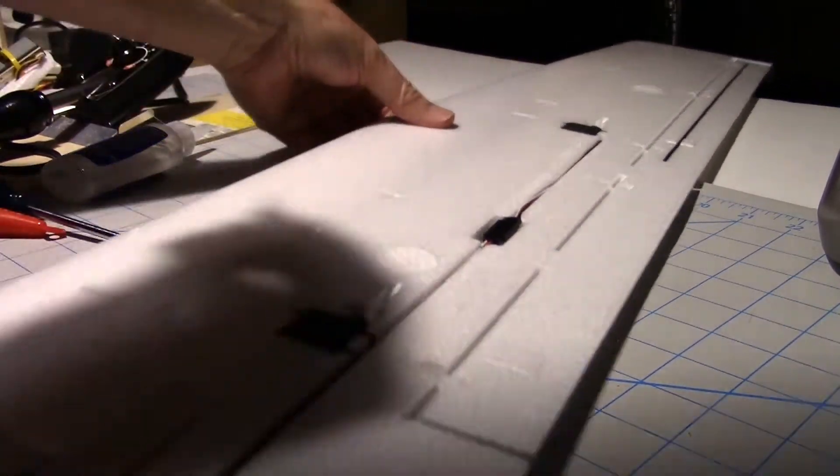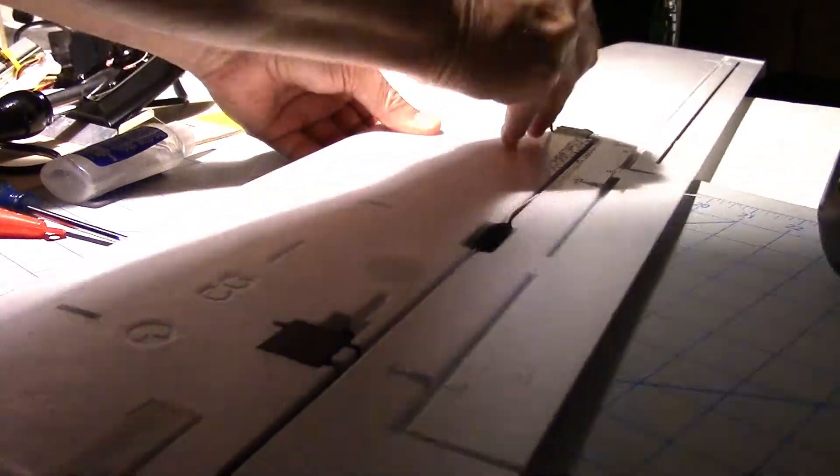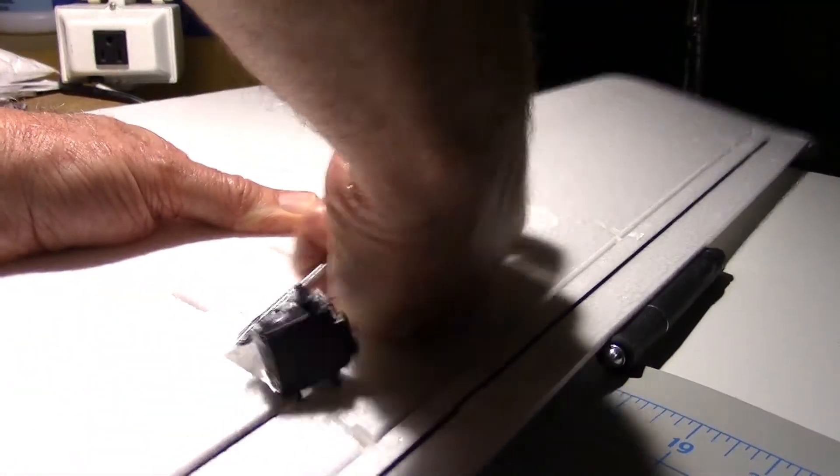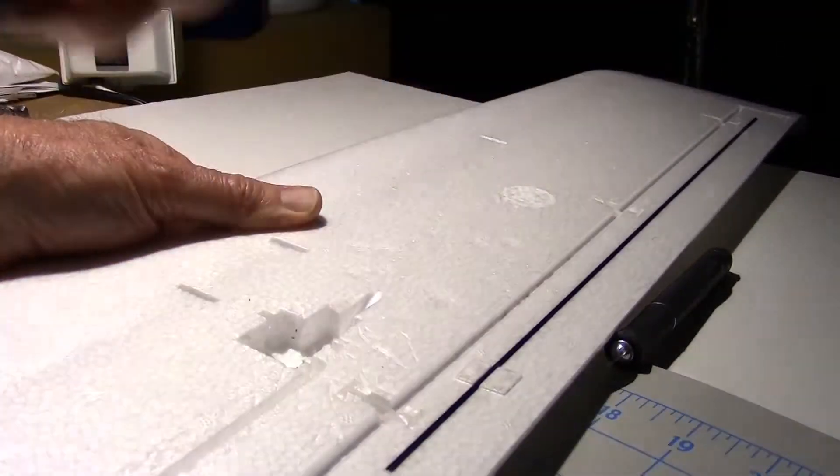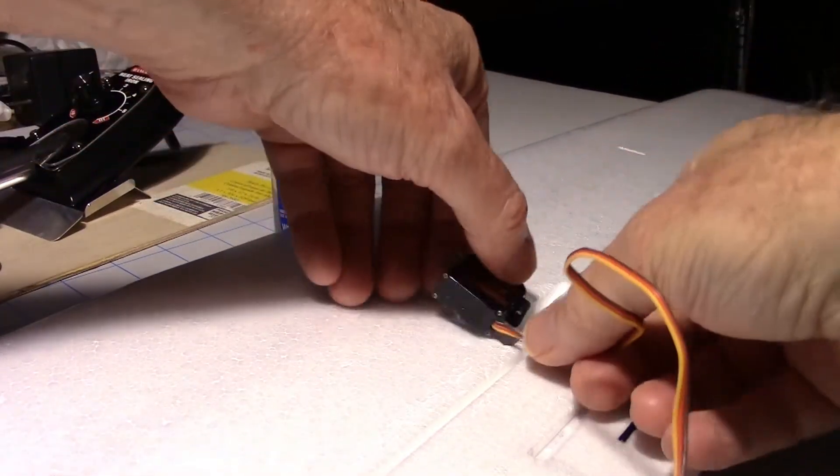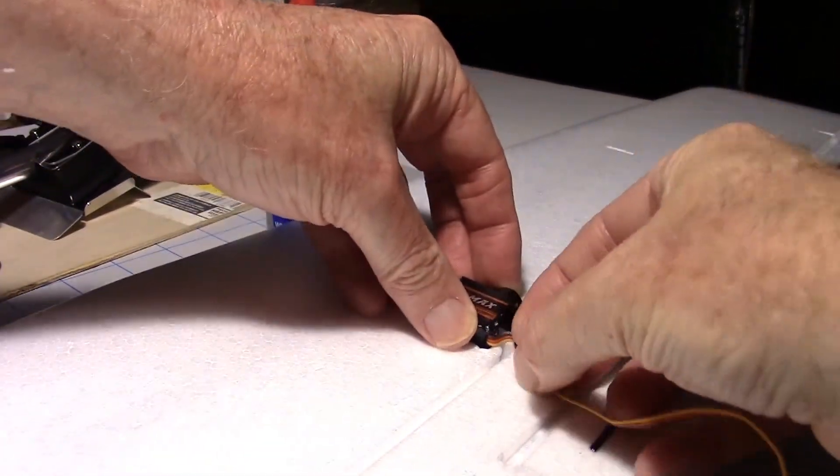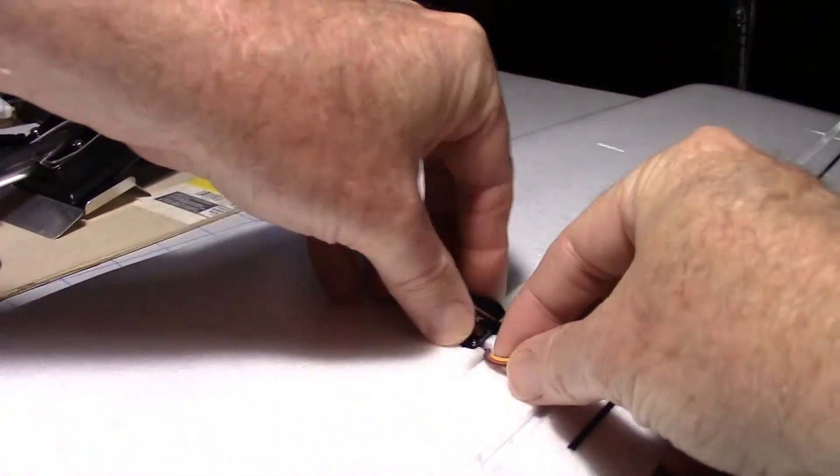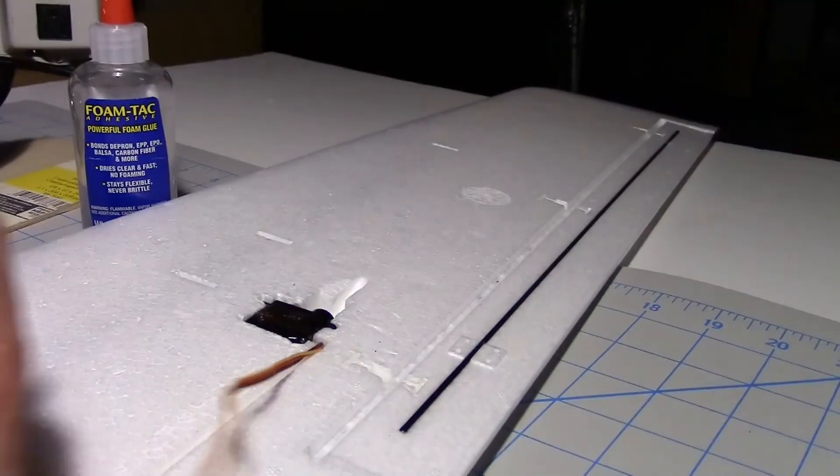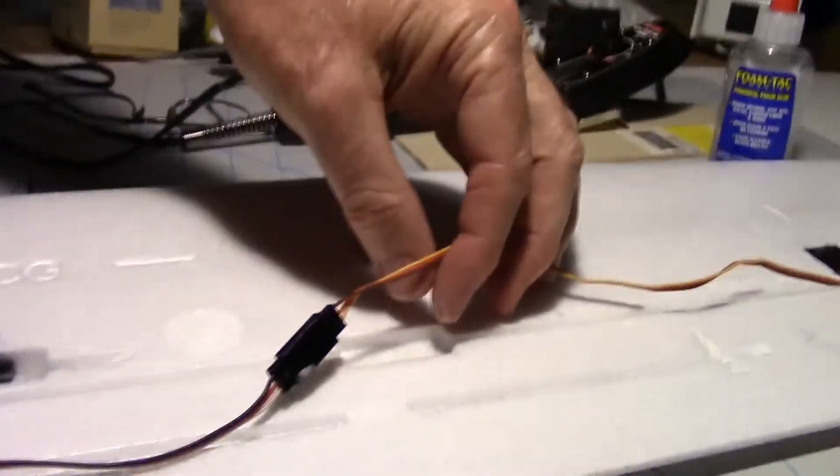Doing the same thing to the other wing, peeling off the vinyl tape, cutting around this servo, prying out the servo. Just letting the foam tack dry for a few seconds. I'm going to put the servo in, run the wire, and then put the tape back on.